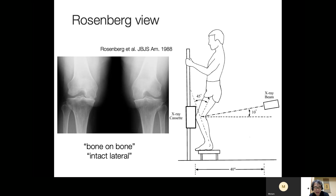In addition to the stress X-ray, the Rosenberg view is very beneficial to identify medial-side bone-on-bone and intact lateral cartilage. I prefer to use both the stress X-ray taken at 20 degrees of flexion and the Rosenberg view taken at 45 degrees of flexion, as they assess different parts of the cartilage area. Sometimes in the 20-degree view there is still a joint space, meaning there is cartilage at that contact point, but at 45 degrees the cartilage is already gone. So it is very beneficial to evaluate the joint space at different angles.